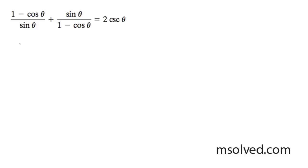So starting from here, we're going to get 1 minus cosine, so it's going to be multiplied times itself, squared. And then we're going to get sine squared theta. And this is all going to be over sine theta times 1 minus cosine theta.